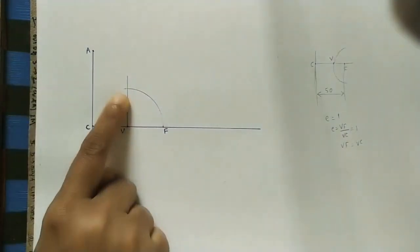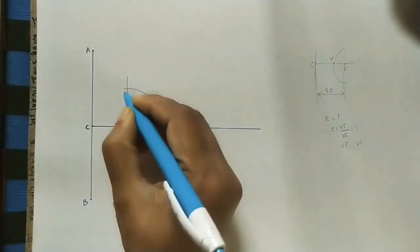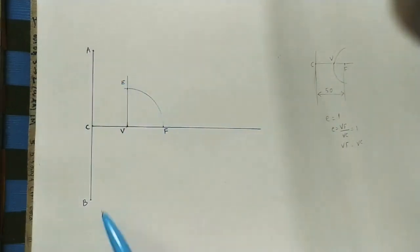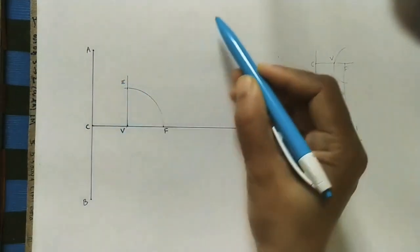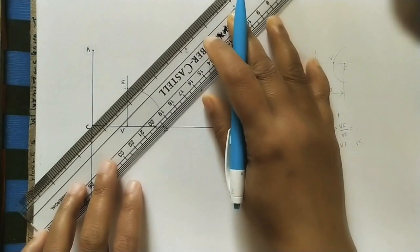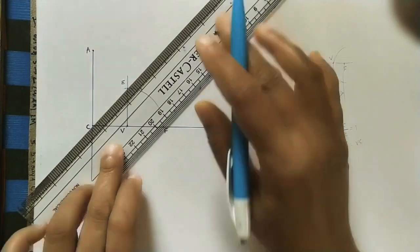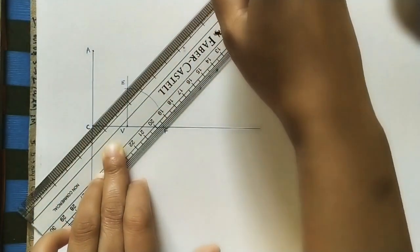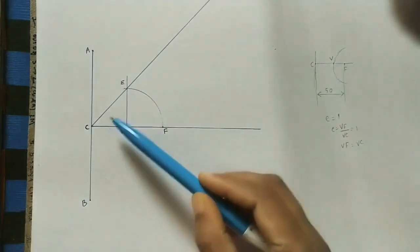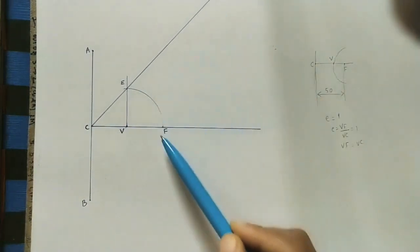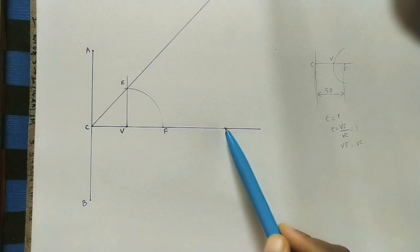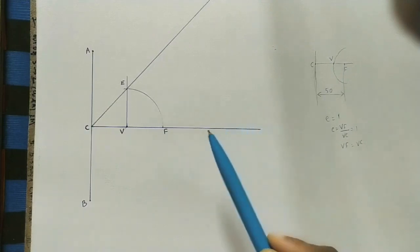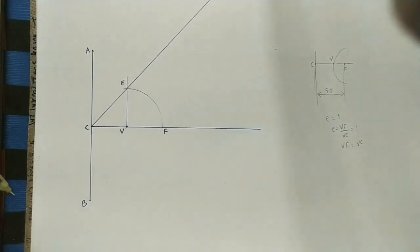Extend the arc up to this line and take this intersection point as capital E. Join C to E and extend that line. After getting this inclined line, mark some points on the axis to do the parabola. We can take 3, 4, or 5 points at equal or unequal distances. I am taking equal-distance points from V.